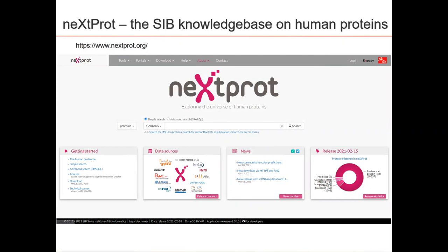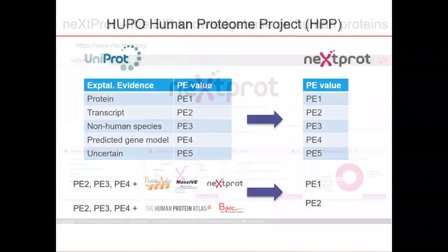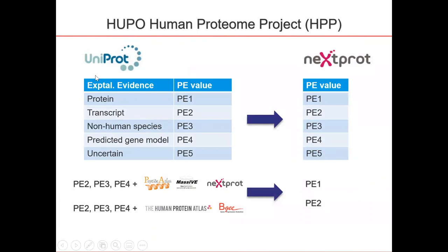So what do we know about the human proteome? Let's consider the Human Proteomics Organization, which launched the Human Proteome Project 10 or 11 years ago. Their aim was to get evidence from mass spectrometry for the presence of as many as possible of the 20,000 protein-coding genes that humans have.